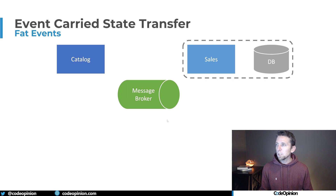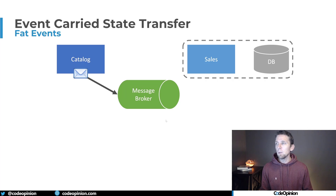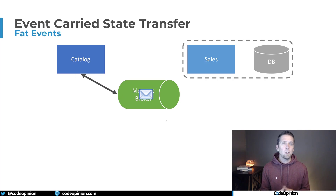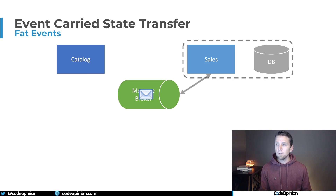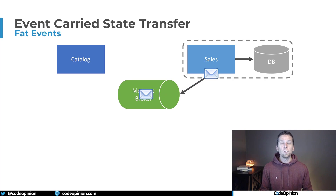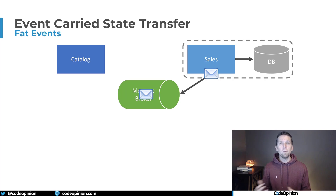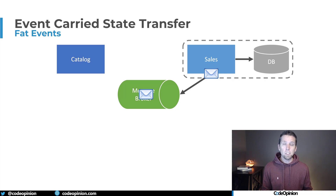When our catalog service changes — say the name or the image location — we publish a product changed event. Our sales service picks up that change event and records that information locally. You can think of it as a local cache, so now the sales service has all the information from the catalog service about a product, along with its price.